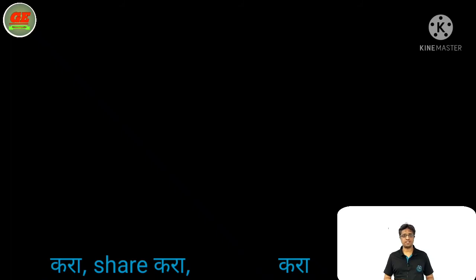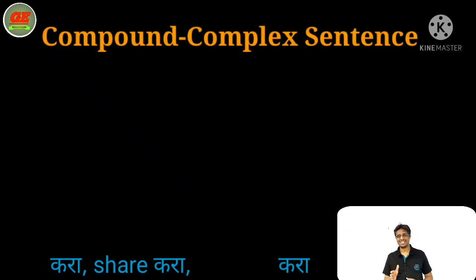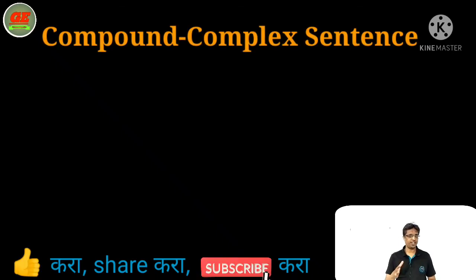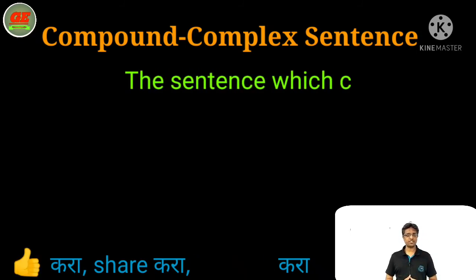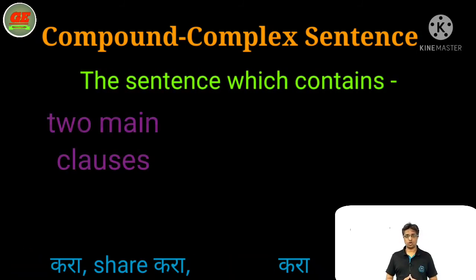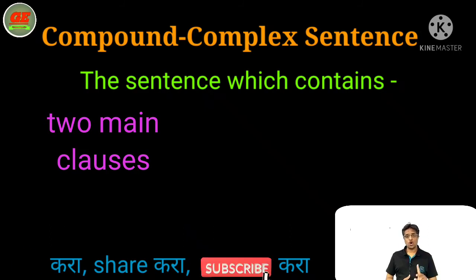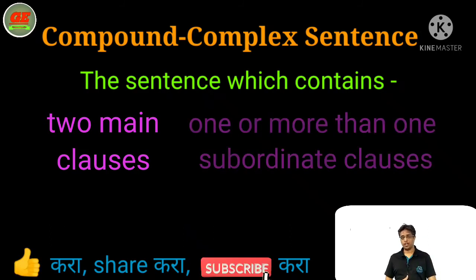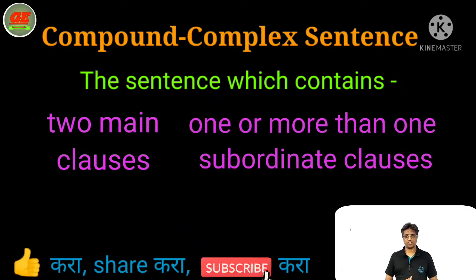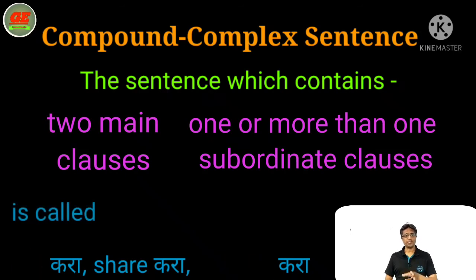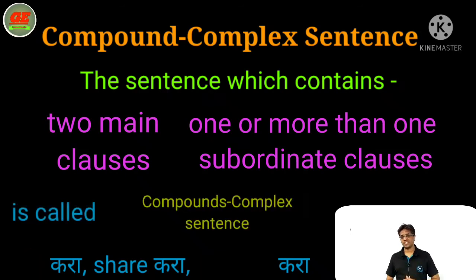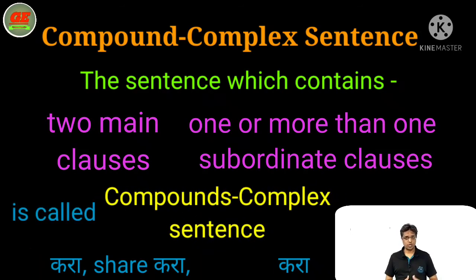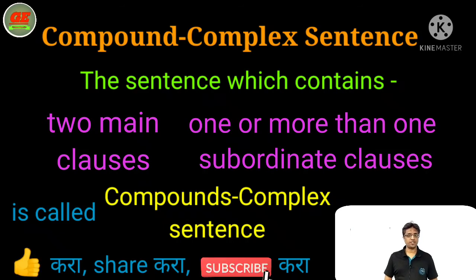Now let's turn to the last type of sentence — that is the compound-complex sentence. Definition: the sentence which contains two main clauses and one or more than one subordinate clause is called a compound-complex sentence.